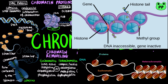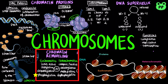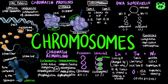Second, methylation can condense chromatin, which promotes heterochromatin, while demethylation can promote euchromatin. Lastly, phosphorylation next to a methylated amino acid can promote euchromatin, and dephosphorylation can promote heterochromatin.